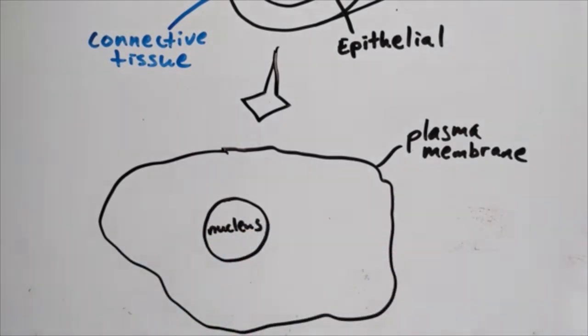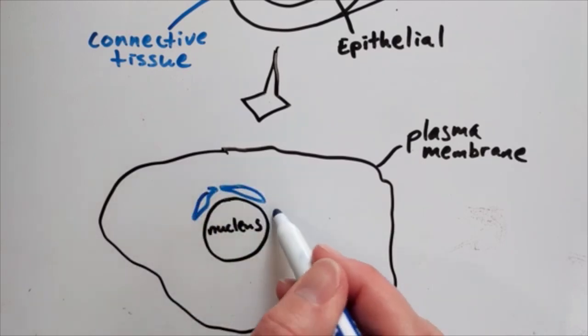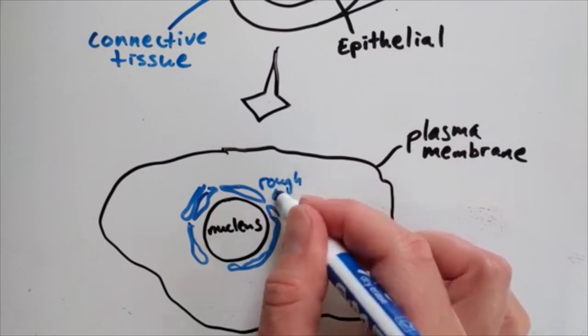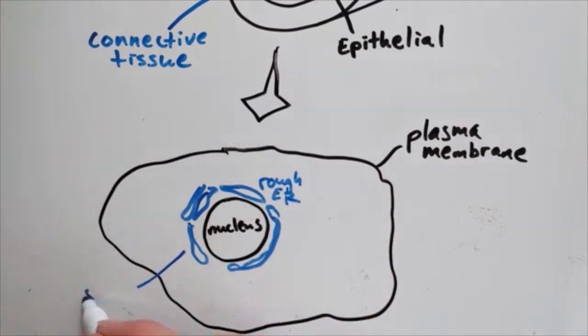The nucleus is surrounded by a bunch of membranes that form the endoplasmic reticulum, or ER. The rough ER has ribosomes on it that synthesize proteins. The smooth ER synthesizes lipids.